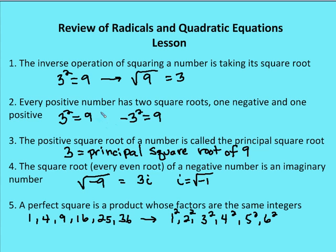Number three: the positive square root of a number is called the principal square root. These are important terms — if you're asked to find the principal square root on a test, you now know that the principal square root of a value is the positive square root of that given number.